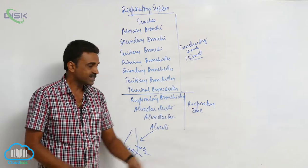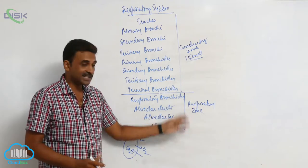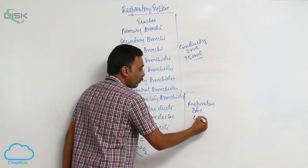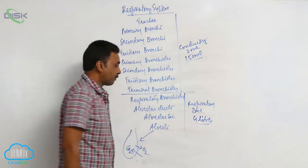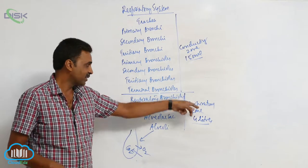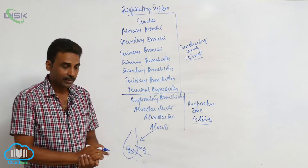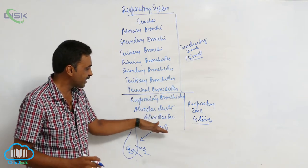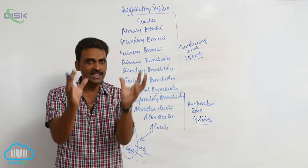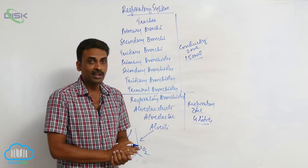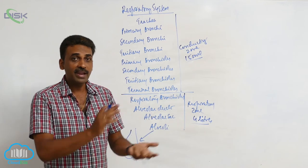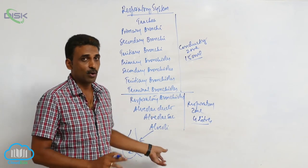That is why this is called the exchange zone, also called the respiratory zone. From respiratory bronchioles, alveolar ducts, alveolar sacs, and alveoli, this area is called the respiratory zone, also called the exchange zone, which encloses up to 4 liters of air where exchange of gases is possible.